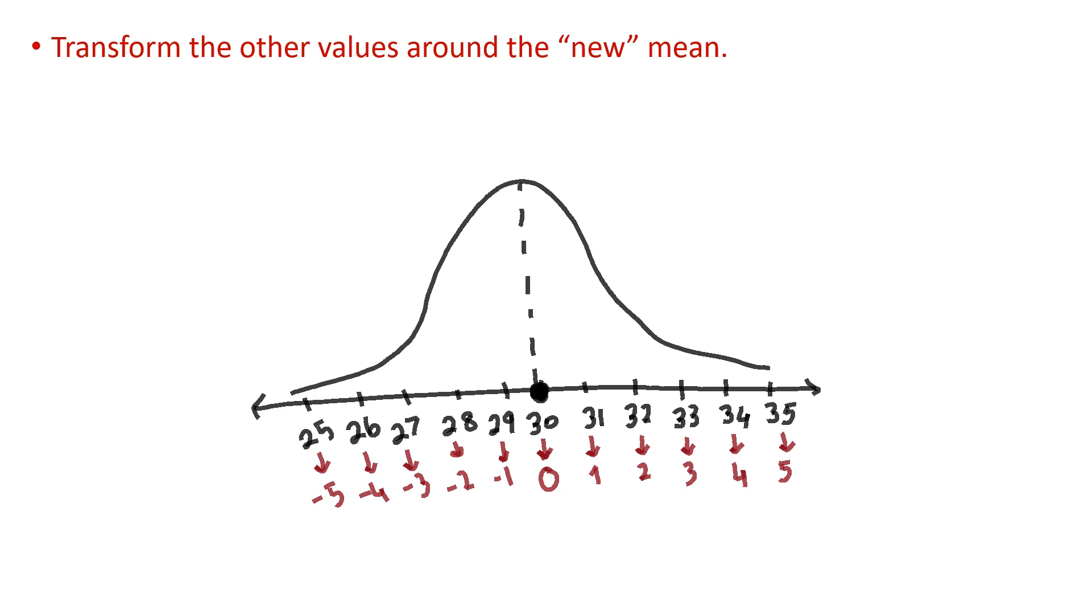On the left side, you will find the negative values because the formula is the same. Value minus the mean. 29 minus 30, minus 1. 28 minus 30, minus 2.